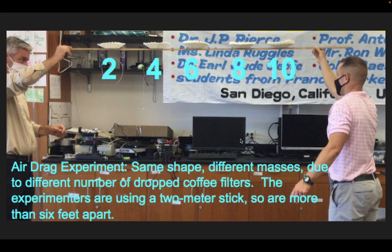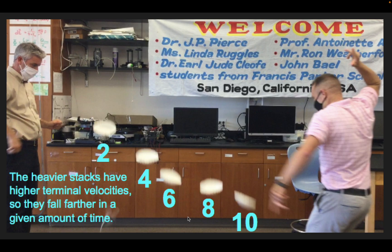When we dropped them, we just released the stick. The stick falls faster than the coffee filter, so it's out of the picture. What you see is that the heavier stacks do indeed have higher terminal velocities because they've fallen a greater distance in the same time. So the stack of 10 filters fell farther in the same time than the stack of two, four, six, or eight.